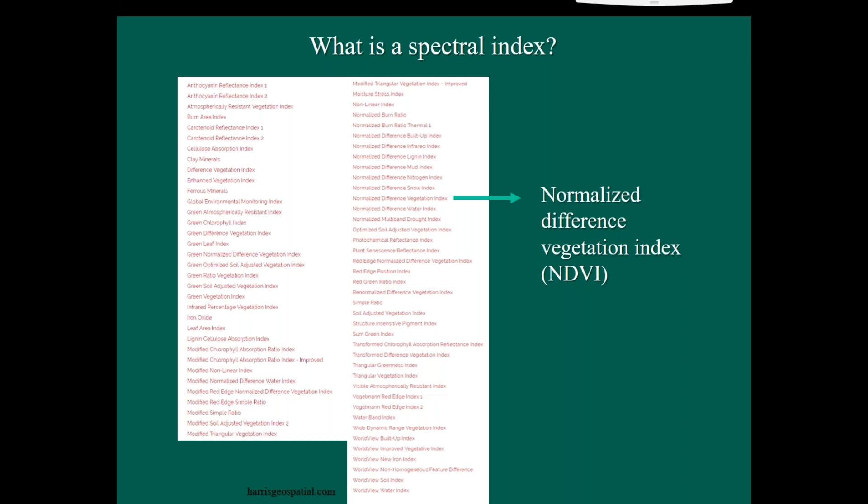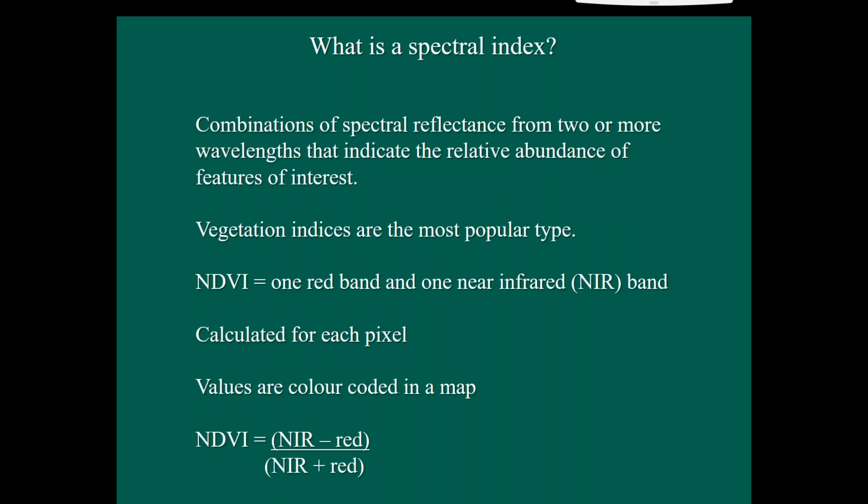So what is a spectral index? Well, here's a list just to show that there are a lot around. There's many more than that as well. But there's one particular called the Normalized Difference Vegetation Index that stands out as the most widely used and the most consistently used spectral index. We'll have a quick look at why that is and how it actually works. So spectral index is a combination of spectral reflectance from two or more wavelengths that indicate the relative abundance of features of interest.